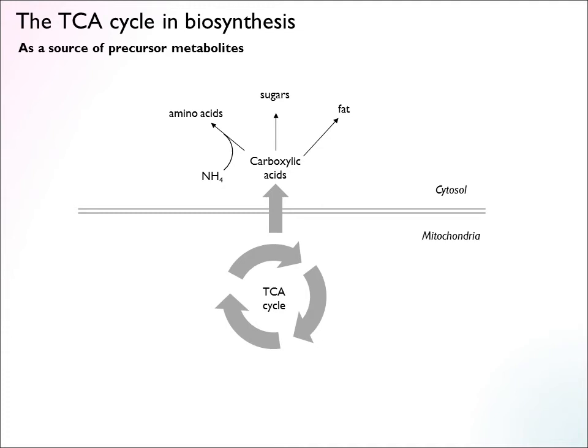We have considered the TCA cycle as an oxidative pathway — oxidizing carbon and making energy — which is probably its most well-known function. But the TCA cycle also has a role in biosynthesis as a source of precursor metabolites, which is pretty much the opposite. Instead of nutrients giving rise to carboxylic acids which are catabolized to carbon dioxide, we now consider the TCA cycle as a resource of these carboxylic acids. They can be drained from the cycle: there are synthesis pathways that can turn these central metabolites into fat, sugars, amino acids, and other things that cells need.